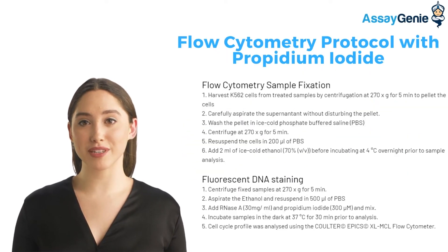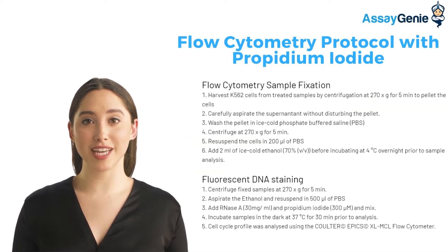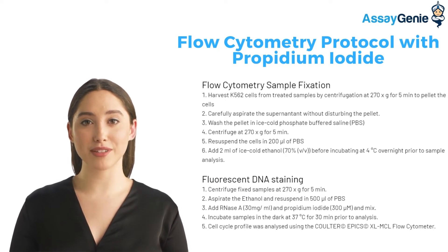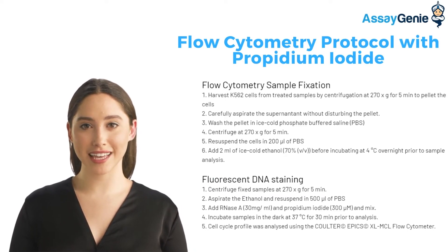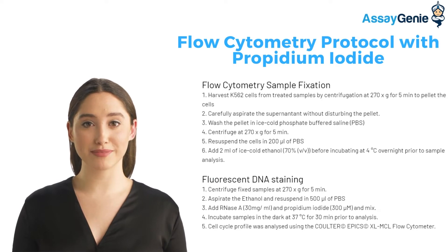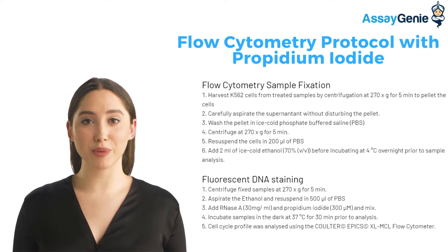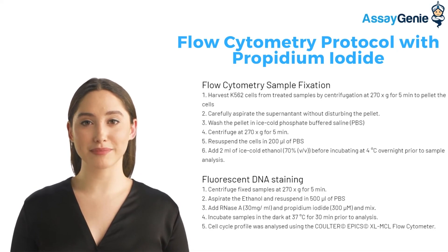This protocol for flow cytometry sample fixation is a quick protocol to prepare cells for cell cycle analysis and DNA labeling. This protocol will help you measure the phase of the cell cycle when stained with propidium iodide.